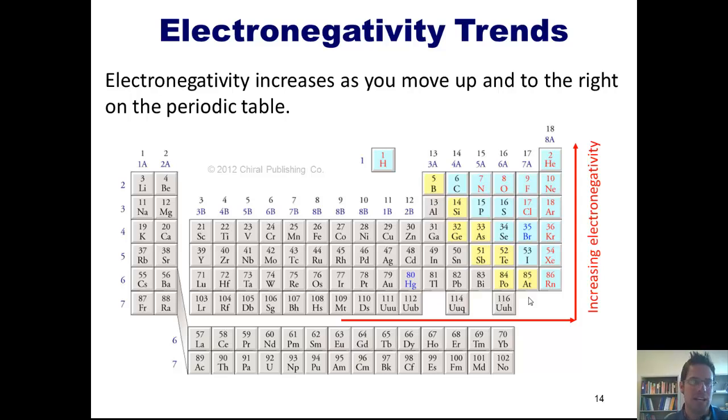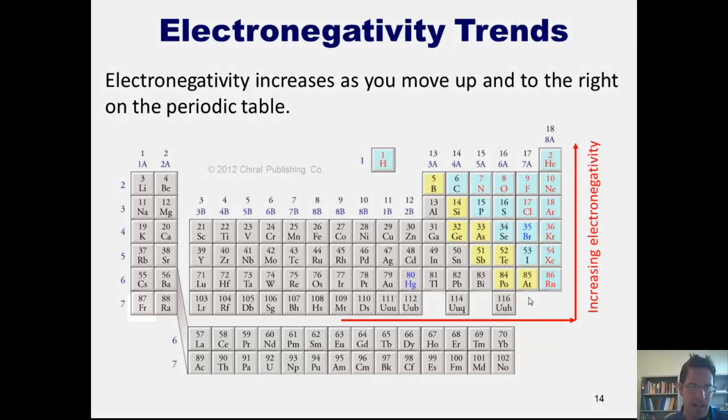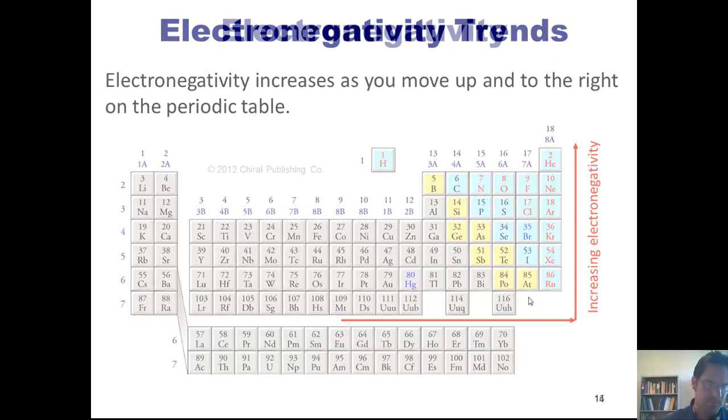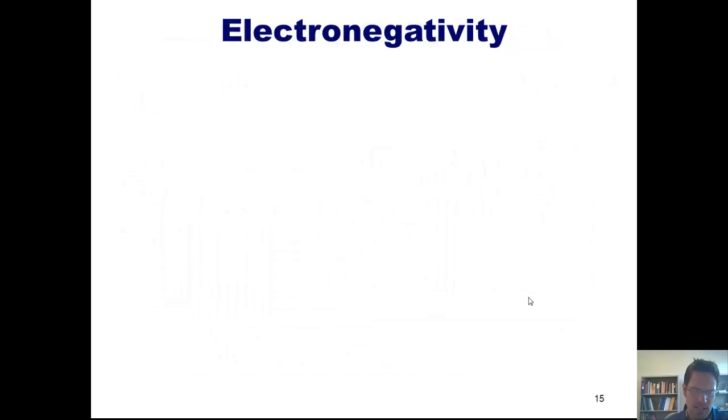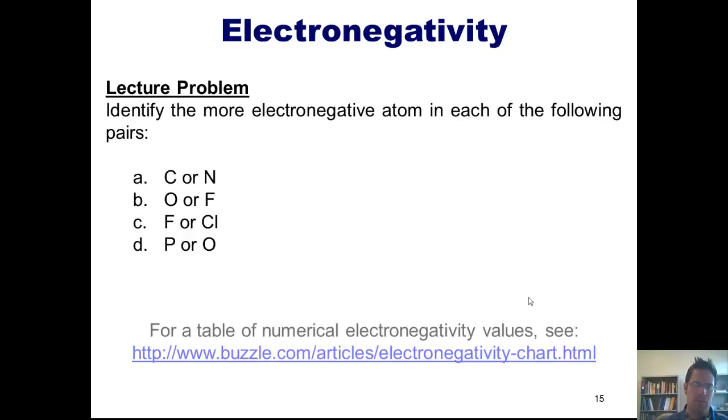Thus, the most electronegative atom on the periodic table is fluorine, and the least electronegative element is francium. So let's see if you can do this lecture question. Identify the more electronegative atom in each of the following pairs. I feel pretty confident you can do this one on your own. Now, although I'm not going to show it to you, if you wish to see a table that gives numerical values of electronegativity for every element on the periodic table, you're welcome to click on this link.